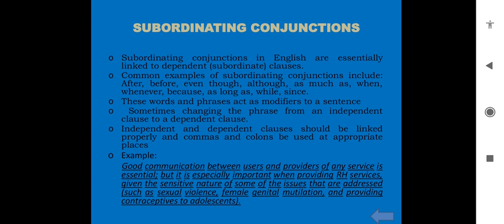Subordinating conjunctions: Subordinating conjunctions in English are essentially linked to dependent subordinate clauses. After, before, even though, although, as much as, when, whenever, because, as long as, while, since are common examples of subordinating conjunctions. These words and phrases act as modifiers to a sentence. Independent and dependent clauses should be linked properly, and commas and colons have to be used at appropriate places.